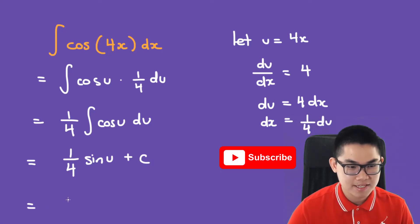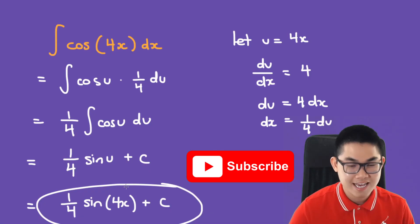And the last step is to replace the u with 4x. Because that's what we started with originally. And this here is our answer.